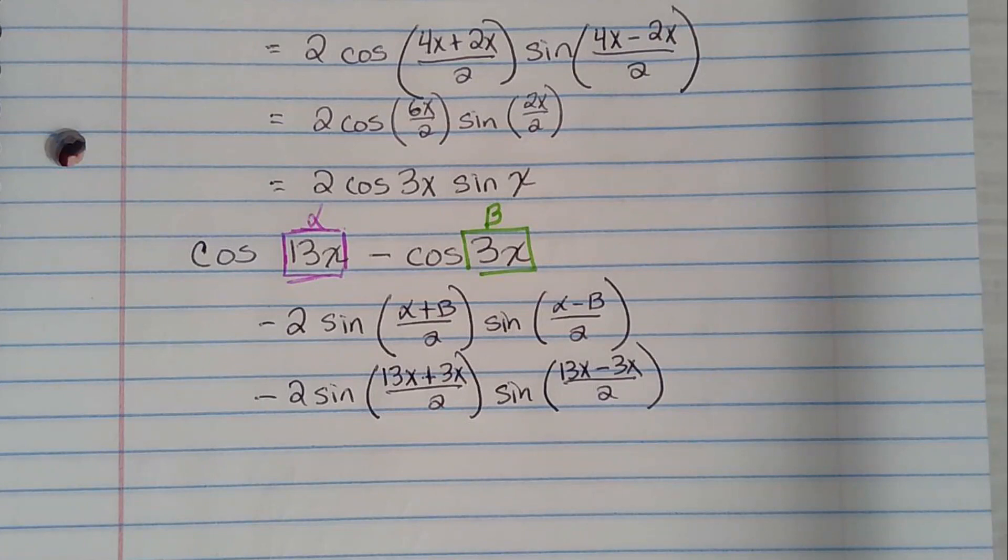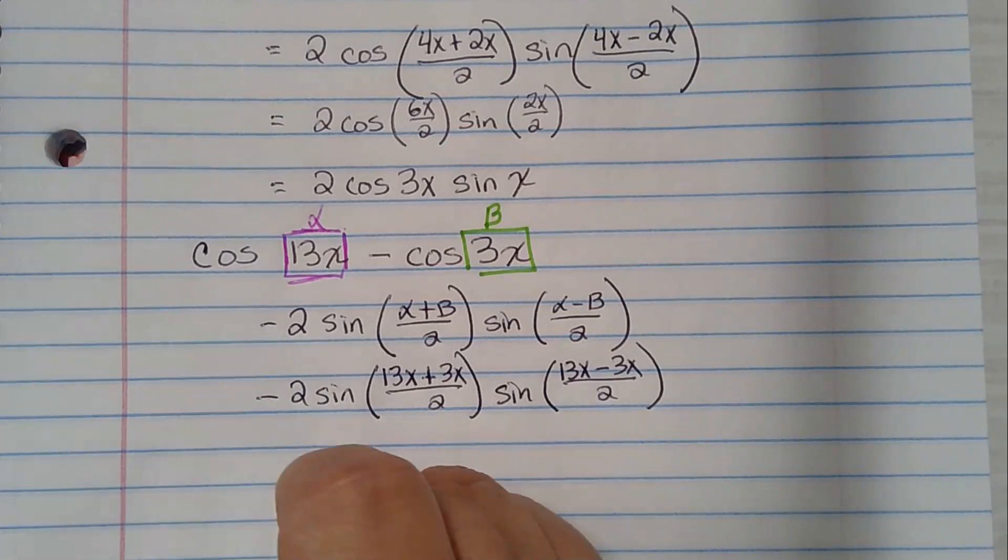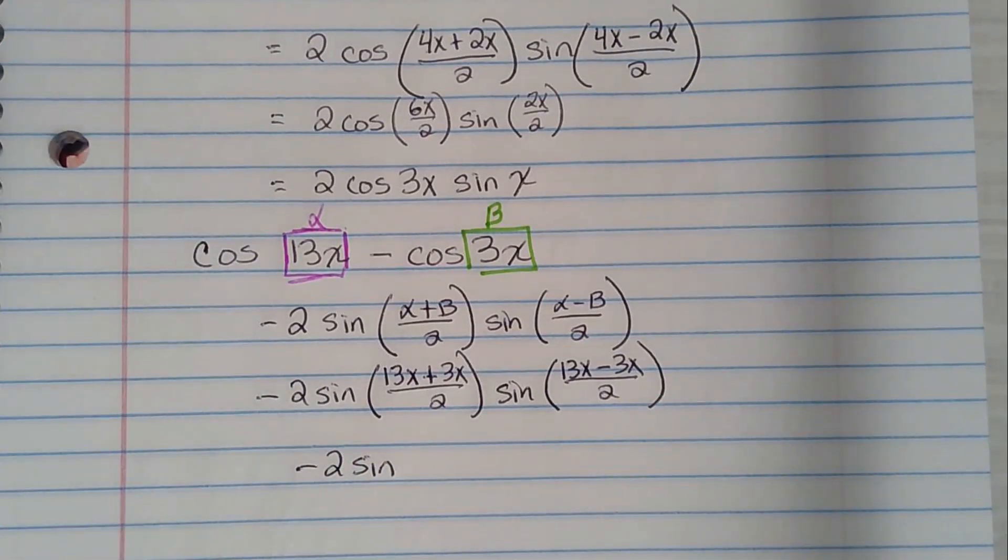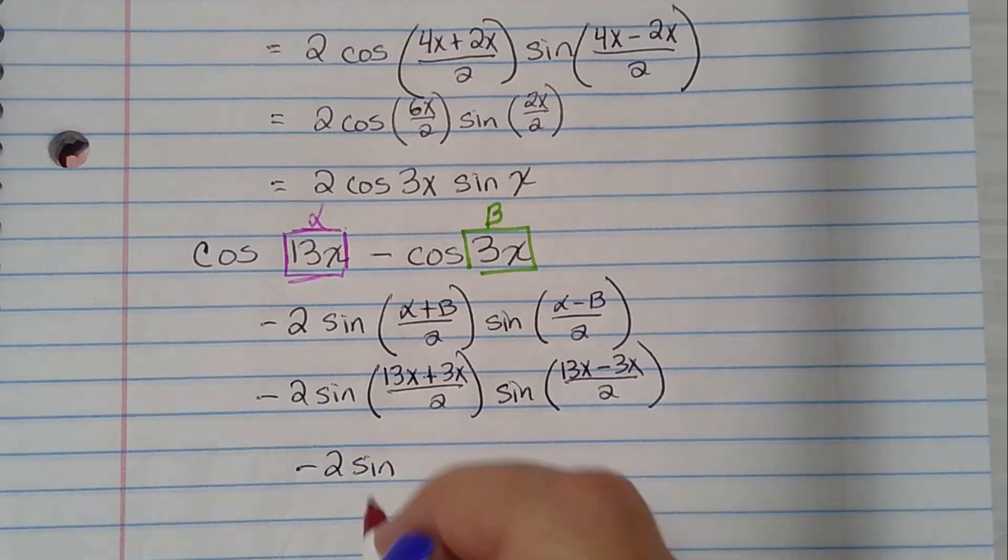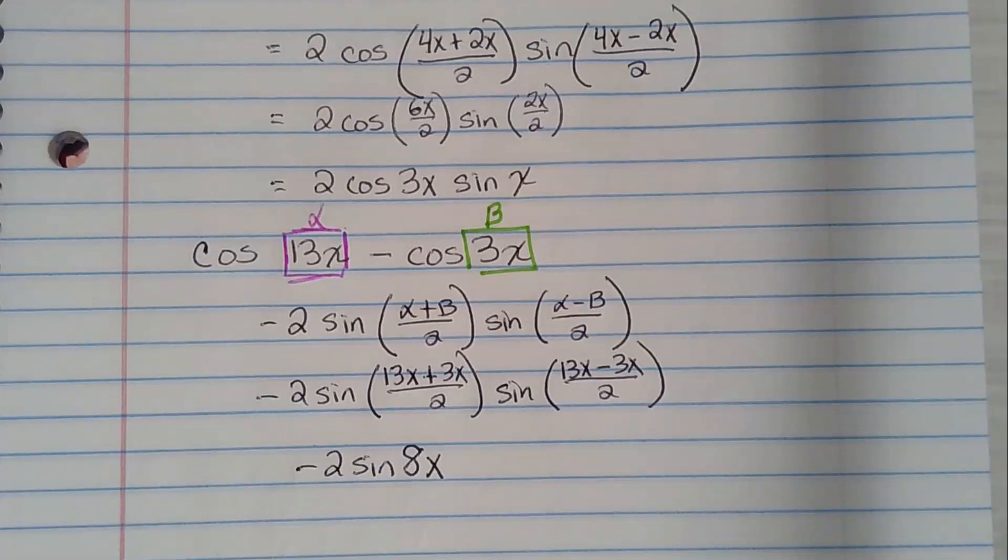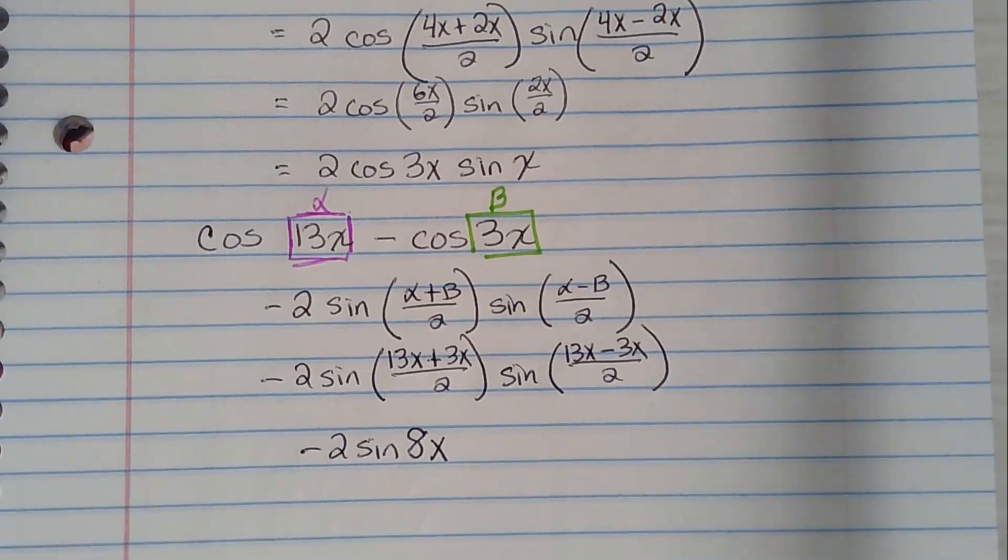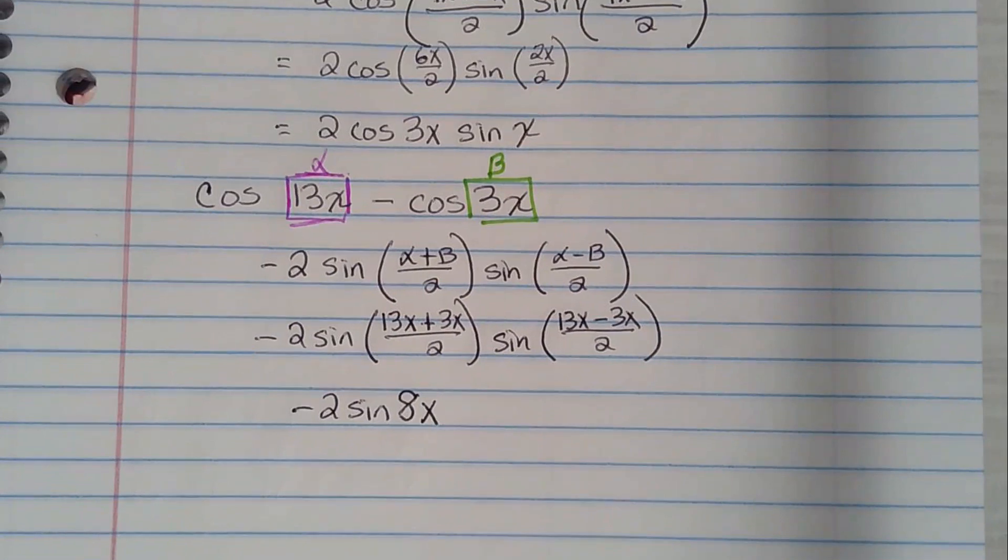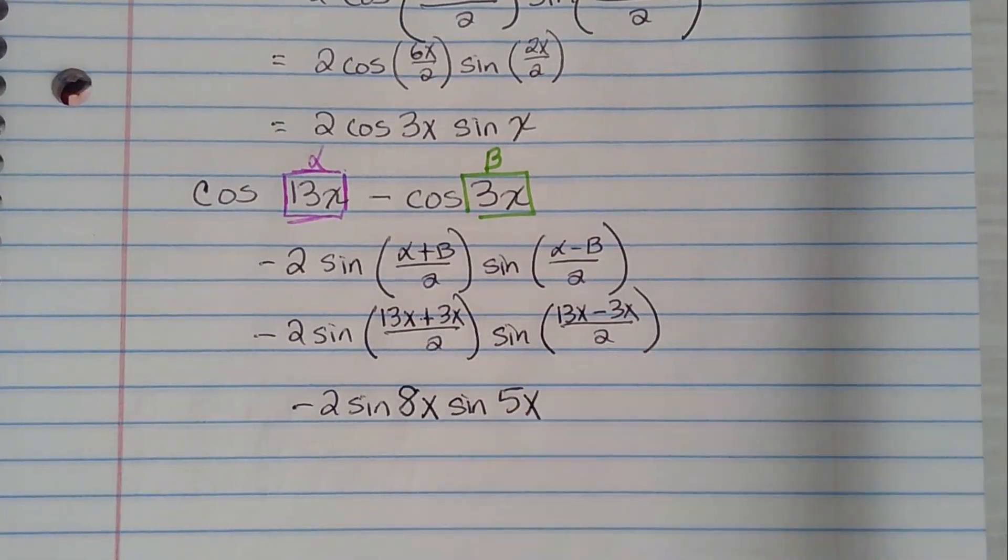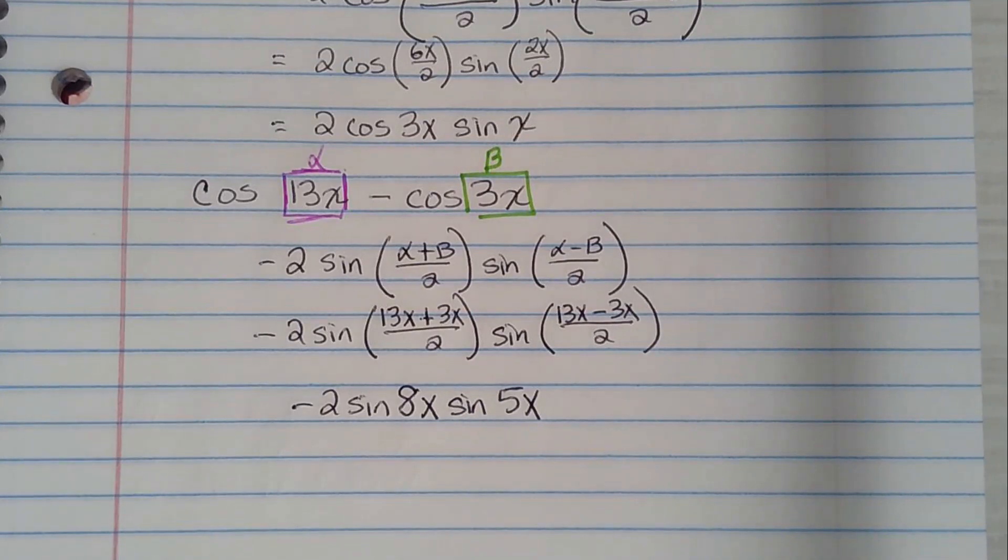And now I'm going to do the adding and the dividing all at once. So I'm going to have minus 2 sine 13x plus 3x makes 16x. 16x divided by 2 is 8x. 13x minus 3x is 10x. 10x divided by 2 is 5x. And that problem is done.